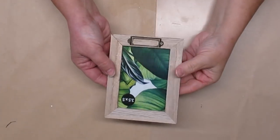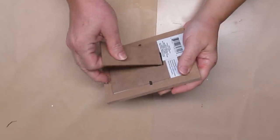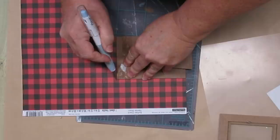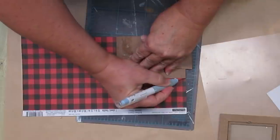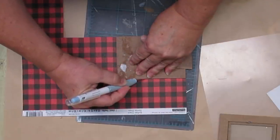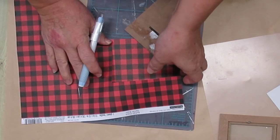My first project for you today is using one of these Dollar Tree frames. I'm going to remove the back but hang on to it because I'm going to need it later. I've got a red and black buffalo check piece of scrapbook paper and I'm just going to use my craft knife to cut around the outside of the backing and that will give me what I need for inside the frame.